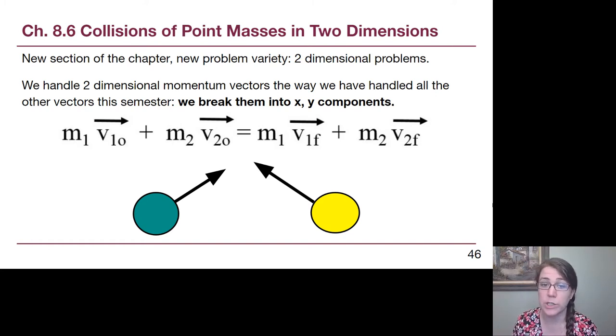The only thing that happens to our equation is now we have to deal with x and y pieces. Now our subscripts start to look pretty messy. We have to make sure we distinguish between object 1 and object 2, between the initial situation (naught) and the final situation (f), and between the x direction and the y direction. The easiest thing to do is make a list of the given information, being really careful in listing out everything based on if it's an x piece or a y piece.